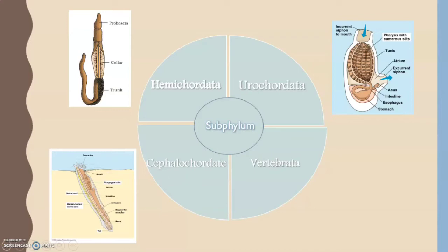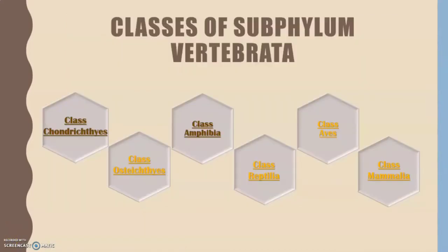Vertebrates are animals with a spinal cord surrounded by cartilage or bone, including mammals, birds, fish, amphibians, and reptiles. Subphylum Vertebrata is further classified into six classes: class Chondrichthyes, class Osteichthyes, class Amphibia, class Reptilia, class Aves, and class Mammalia.